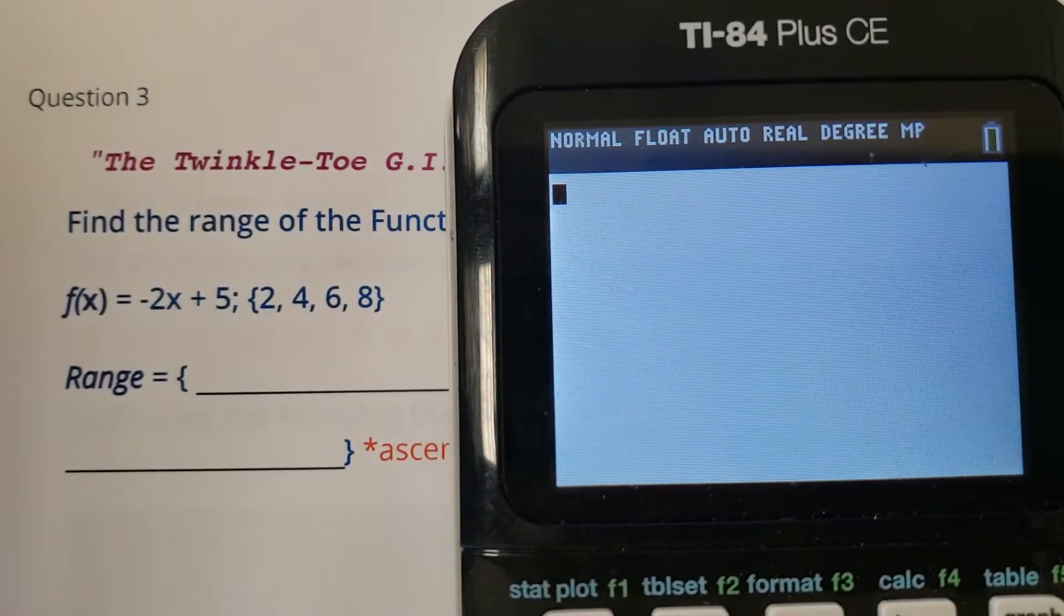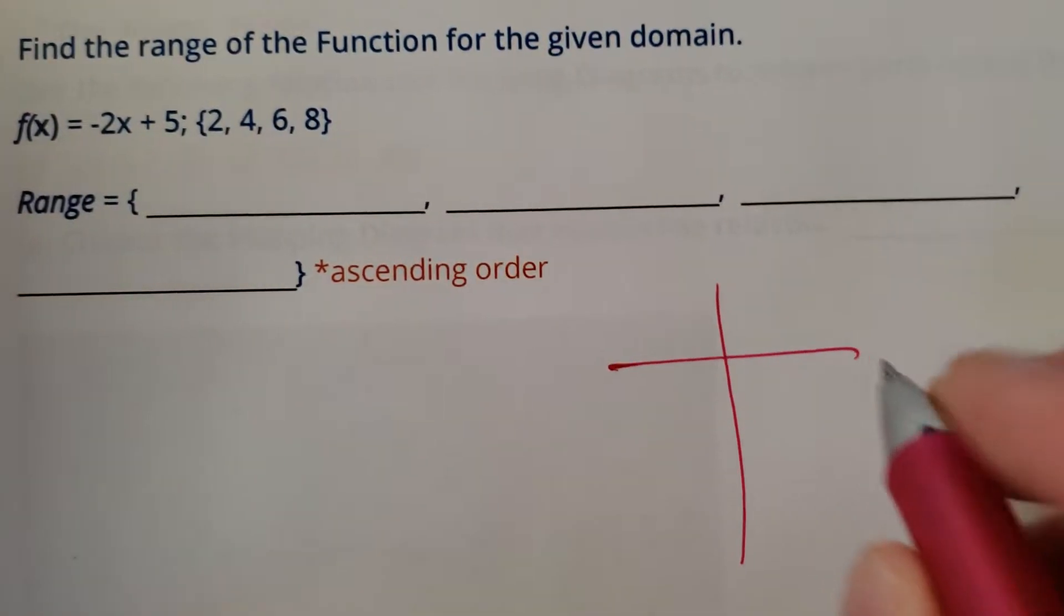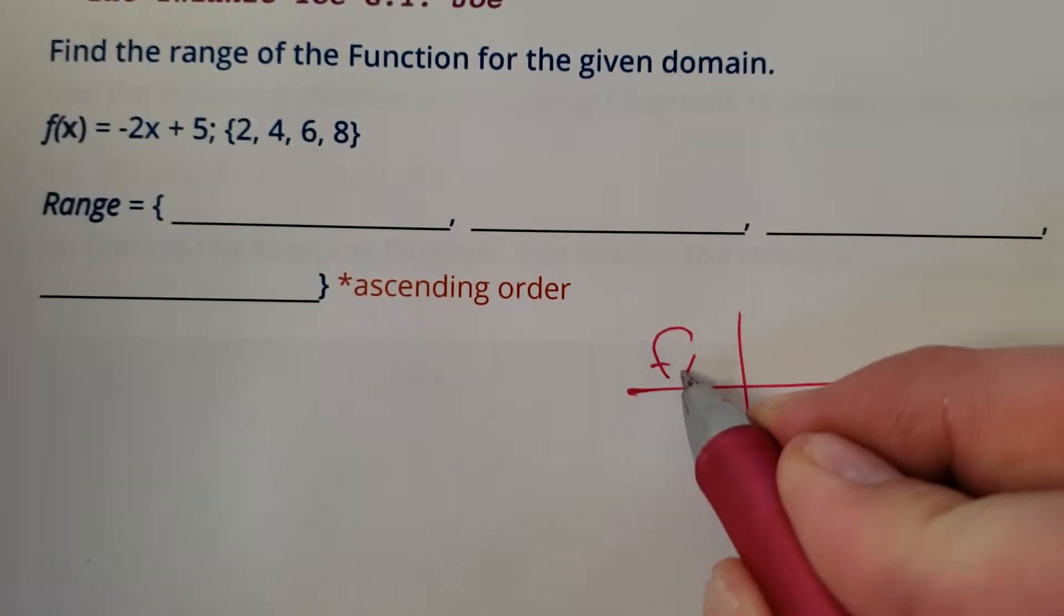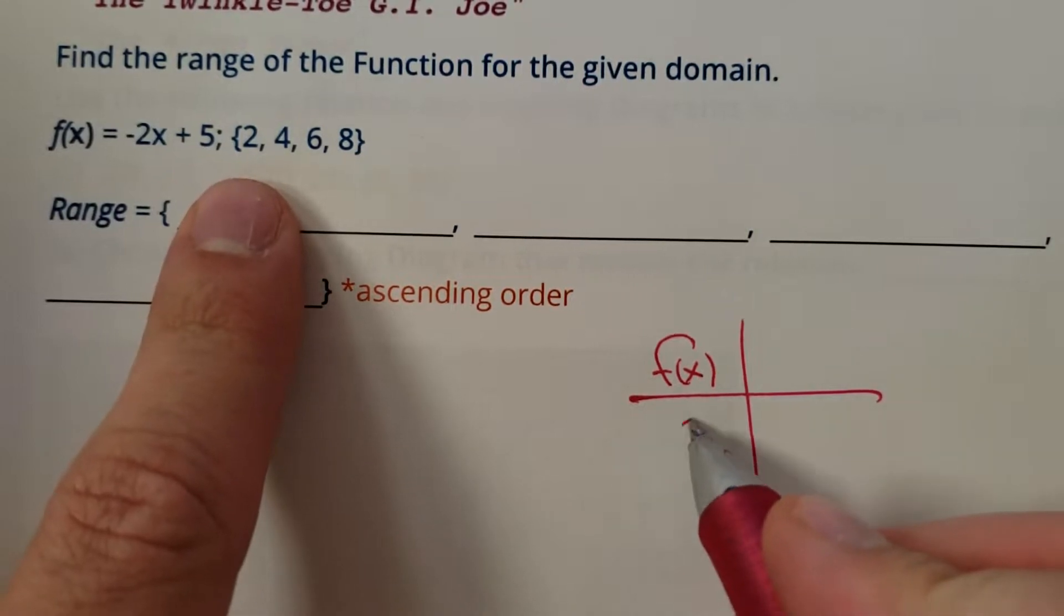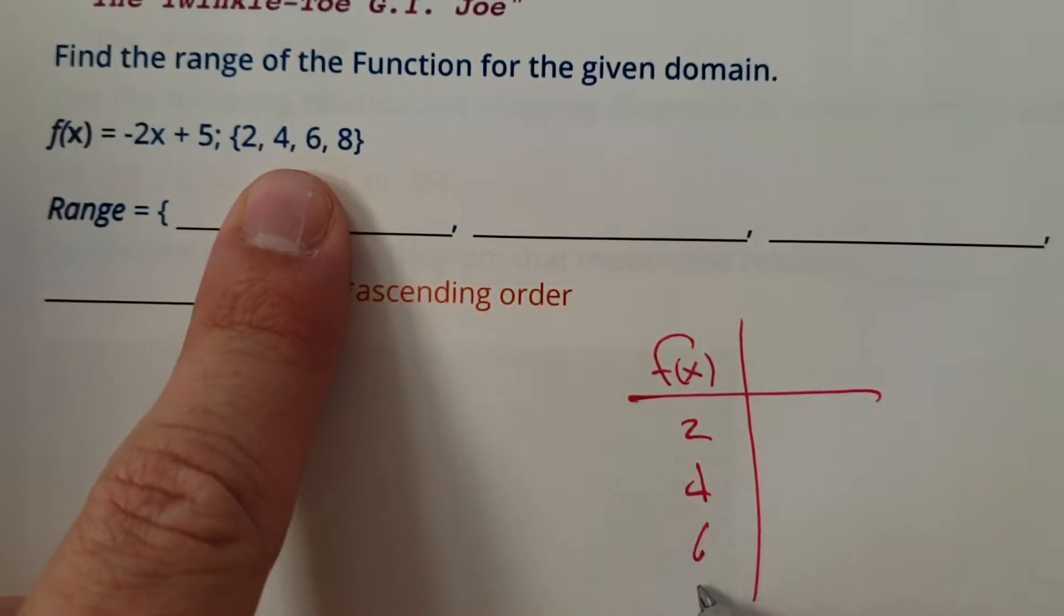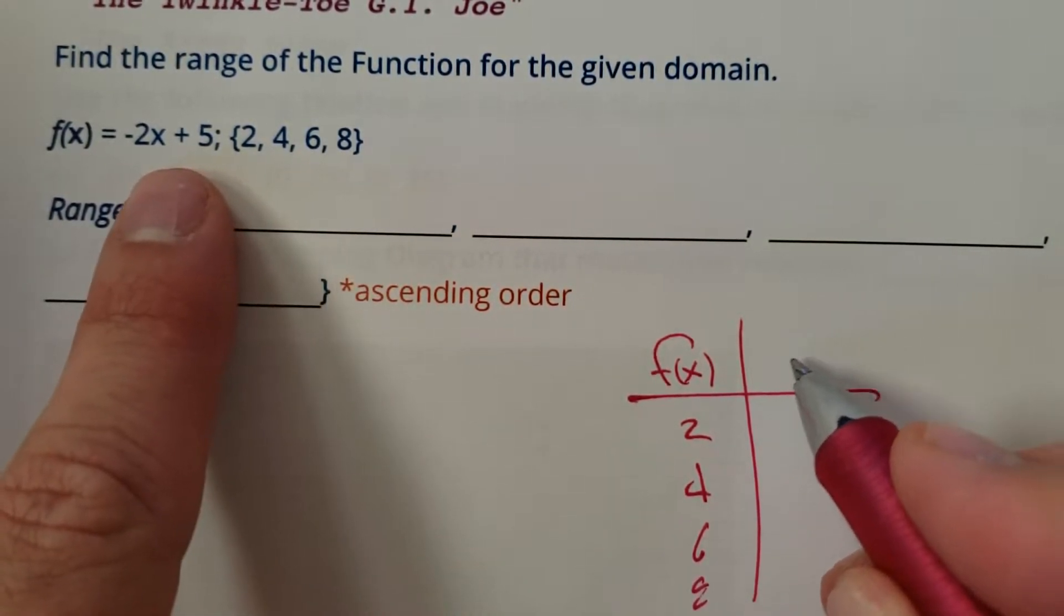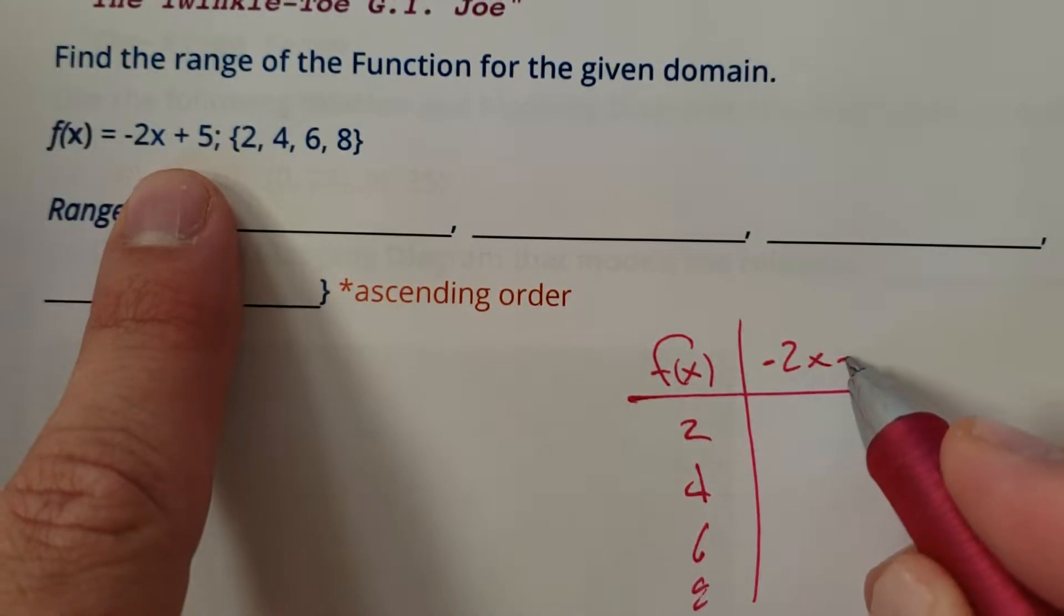Here's what I would do if I were you. One thing you can do if you don't have the greatest calculator skills is you can make yourself a table. Okay, so we put in a 2, we put in a 4, we put in a 6, we put in an 8. And here you can do the negative 2x plus 5.